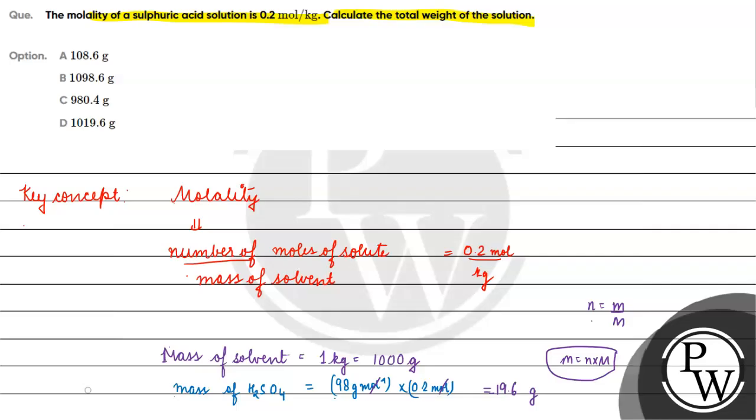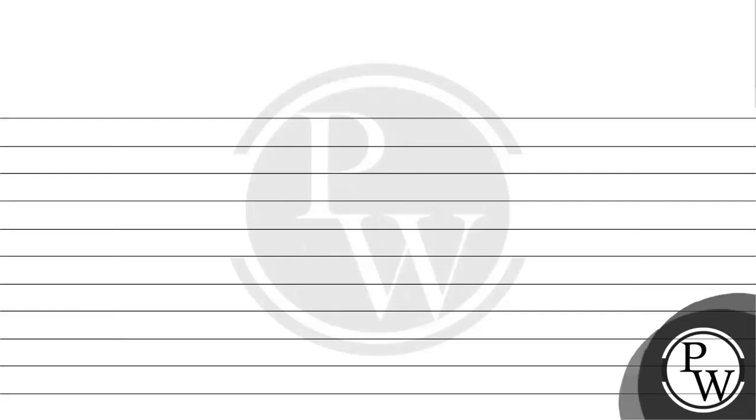Now what will we do? We need total weight of solution. Total weight of solution is sum of mass of solute and mass of solvent. So it will be 1000 plus 19.6. Meaning 1019.6 grams will be the mass of solution.